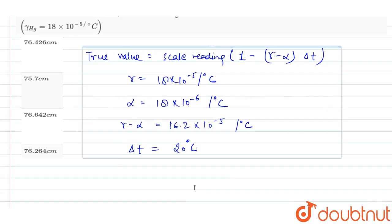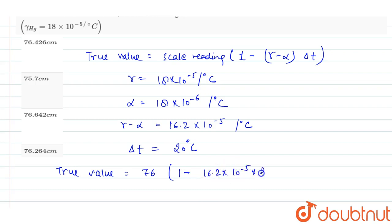The change in temperature will be equal to 20 degree Celsius and the scale reading is 76 cm. So we can write that the true value is equal to 76 cm times 1 minus 16.2 times 10 to the power minus 5 times 20 degree Celsius. Or we can write 76 times 1 minus 0.00324.